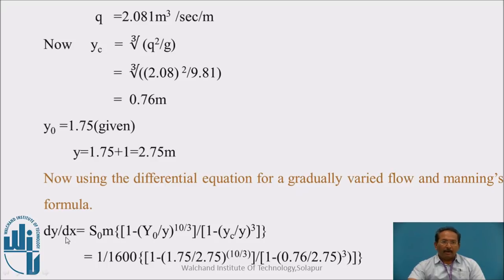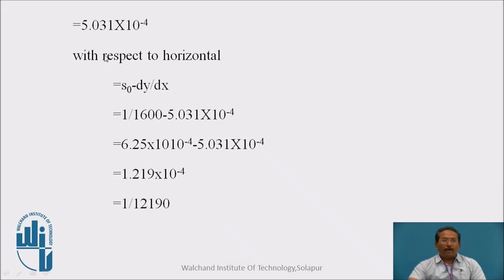Now by using the equation of gradually varied flow with respect to Manning's formula, dy/dx equals S0 times bracket 1 minus y0 upon y bracket raised to 10/3 upon 1 minus yc upon y bracket cubed. Put these values, we get 5.031 times 10 to the power minus 4. But the answer is asked, the slope with respect to horizontal. So slope with respect to horizontal is S0 minus dy/dx. S0 is 1 upon 1600 and dy/dx we have calculated it. So the answer for this is 1 upon 12190. Here we have calculated only dy/dx using the equation of gradually varied flow where Manning's formula is inserted so that the equation becomes an equation representing with the depths.